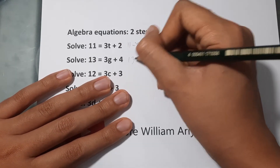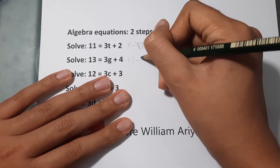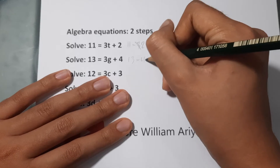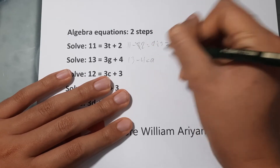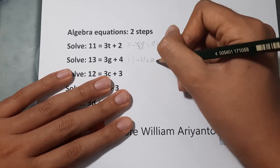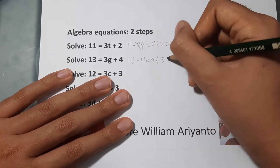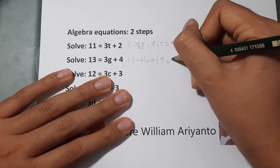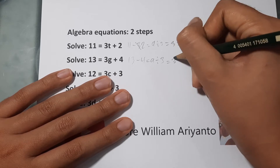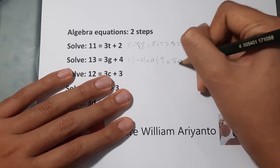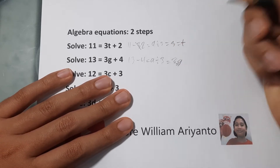13 minus 4 equals 9. 9 divided by 3 equals 3. That's g.